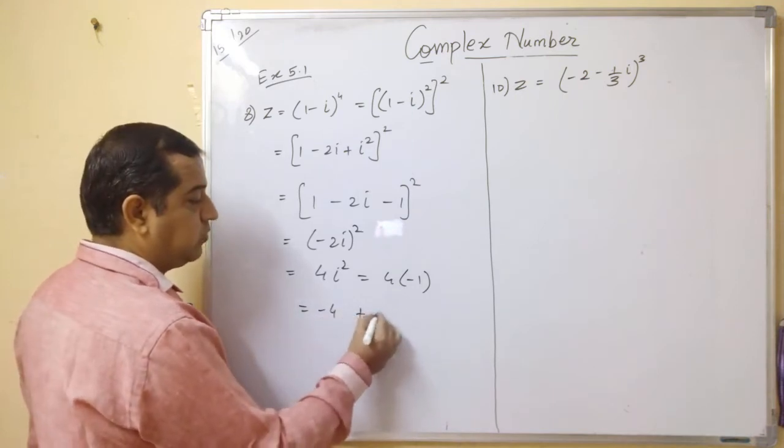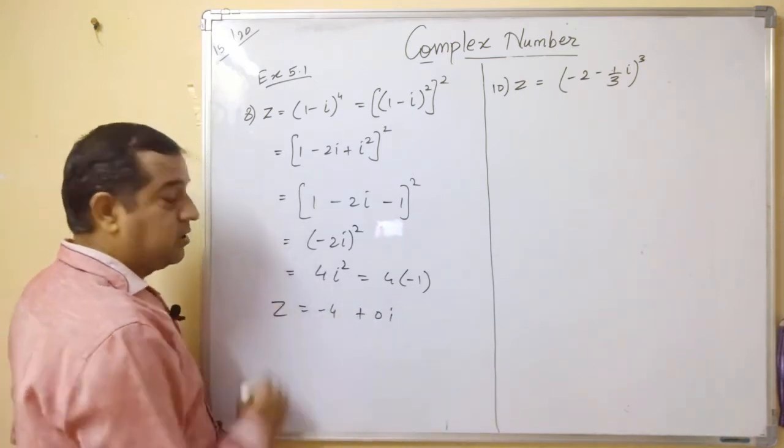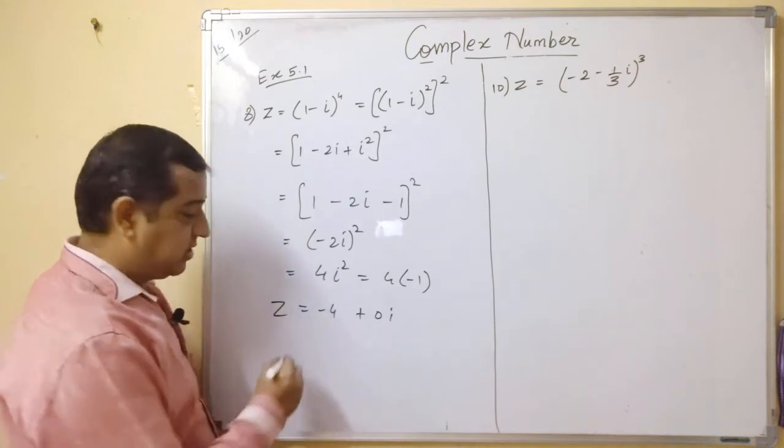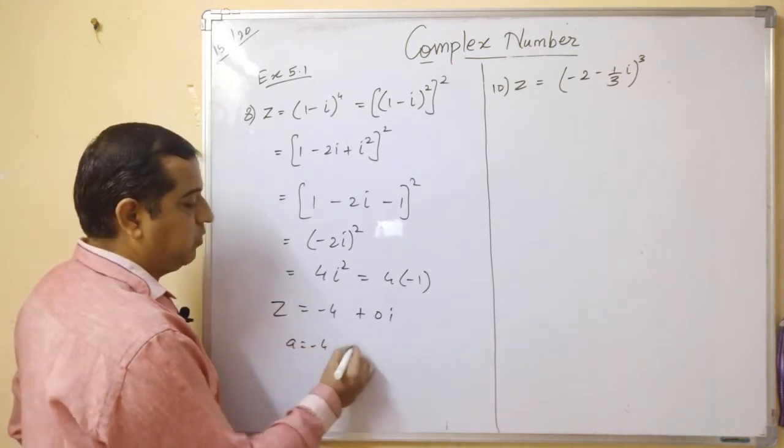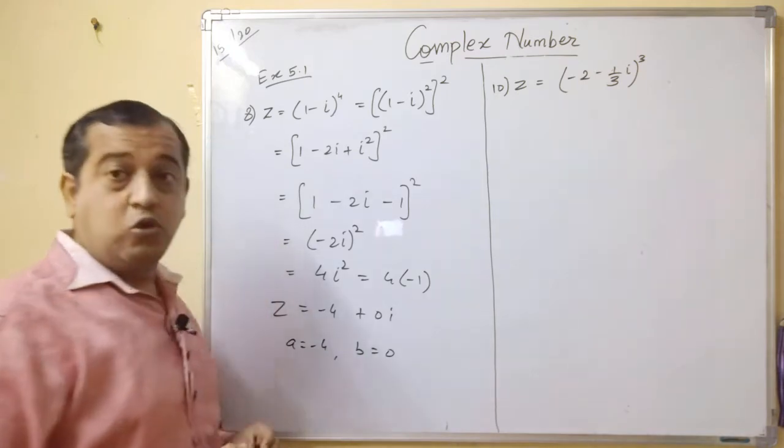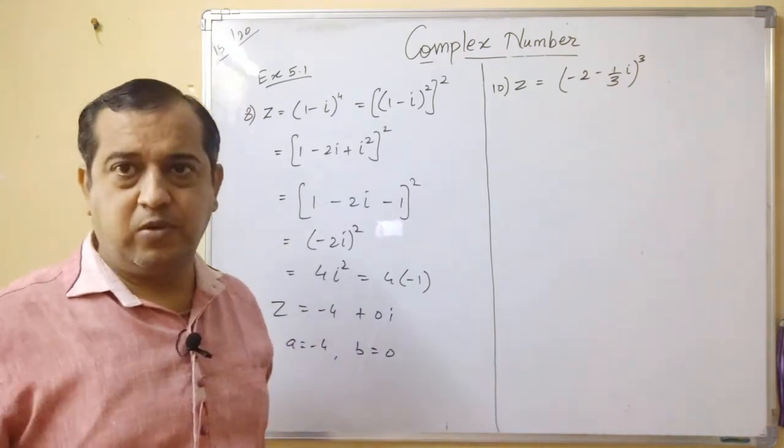Now you can write this minus 4 as minus 4 plus 0i. So the complex number in a plus ib form, where a is minus 4 and b is zero. So very very easy.